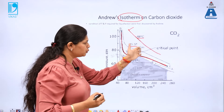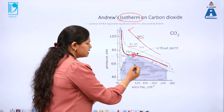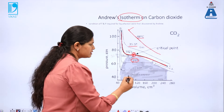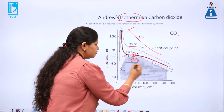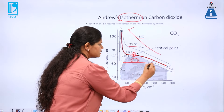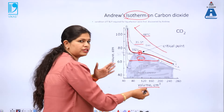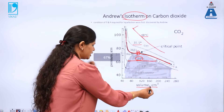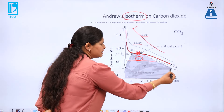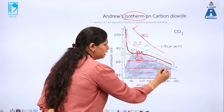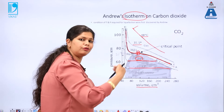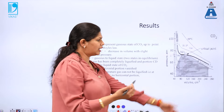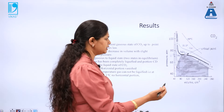Similarly, the isotherm plotted at 21 degree Celsius shows a point where there is a small variation in pressure with almost a large change in volume. This horizontal line increases further if you lower down the temperature. These findings suggested how the states of matter are changing.